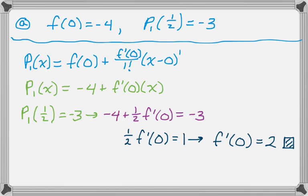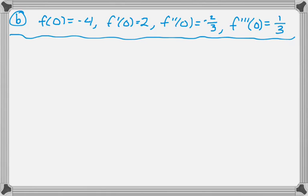The next part is going to give us a couple more things. We know from the previous part that f(0) = -4, f'(0) = 2. We're told that f''(0) = -2/3 and f'''(0) = 1/3. We're asked to find p3(x), which is the third degree Taylor polynomial.